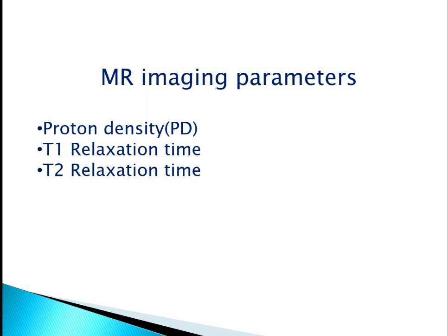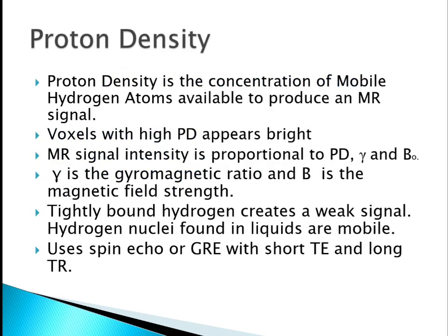The first parameter is proton density. Proton density means it is the concentration or the amount of mobile hydrogen protons that are available to produce an MR signal. Tissues that have more concentration of mobile hydrogen protons will appear bright in a proton density weighted image. Apart from proton density, the MR signal intensity is also proportional to gyromagnetic ratio and the strength of the external magnetic field.